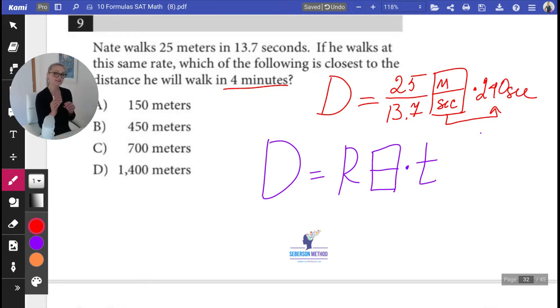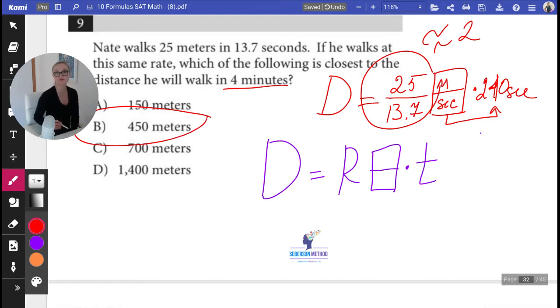What you can see is that 25 is approximately two times greater than 13.7, because if we were to divide 25 by two, we would have gotten 12.5. So this together, without really overcomplicating things, it's going to be two and a little bit less than two, because 13 times two is 26. So I'm thinking it's approximately two, and approximately two times 240 is going to be something around 450. Easy breezy. This is how you can calculate your distance.